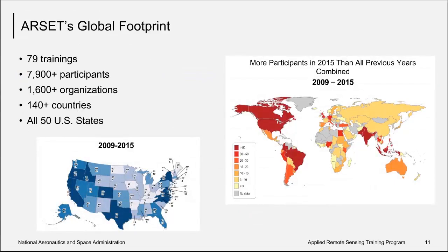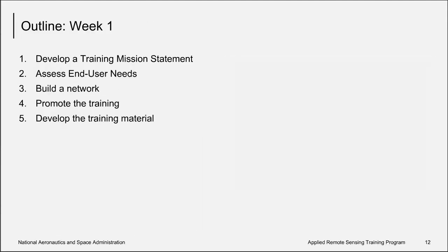This is built into RSET's mission to reach as many around the globe as possible, and the maps here show that we've been doing just that. Of course, not every capacity building program is mandated to train globally. Many train internally only. Some focus on one particular sector or theme, and this is all based on one's mission statement, which brings us to our outline for today's session: defining your program's mission statement, assessing end user needs, methods to build a network, training promotions, and developing training materials.